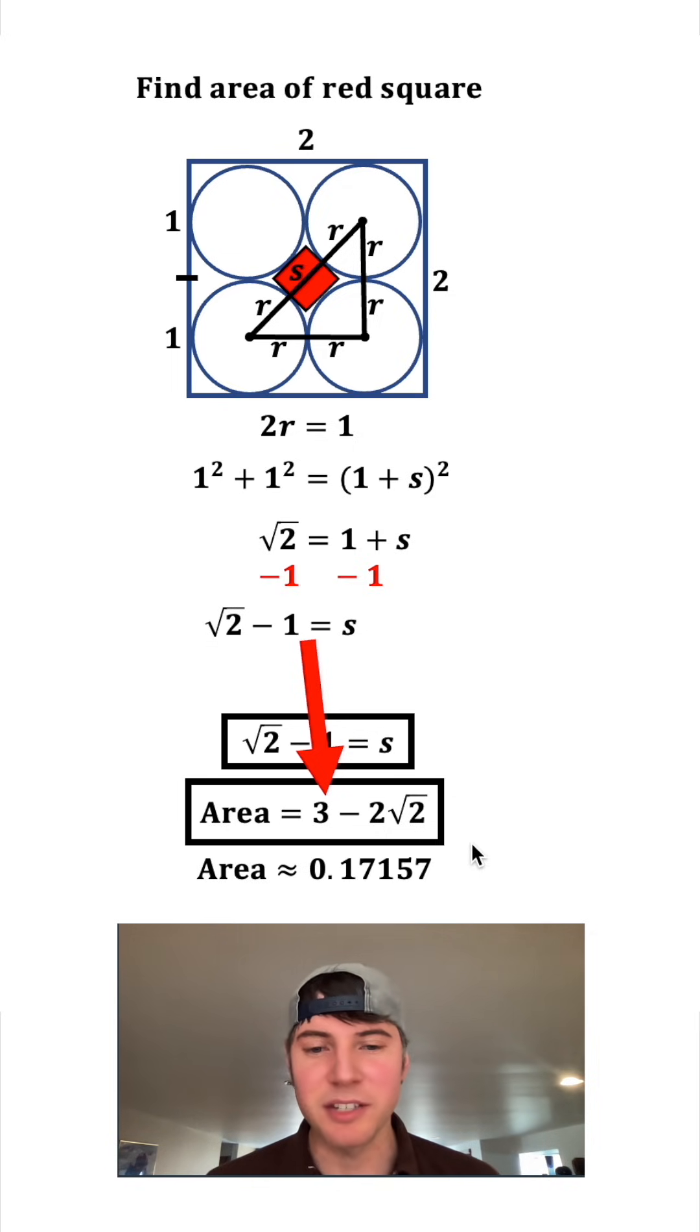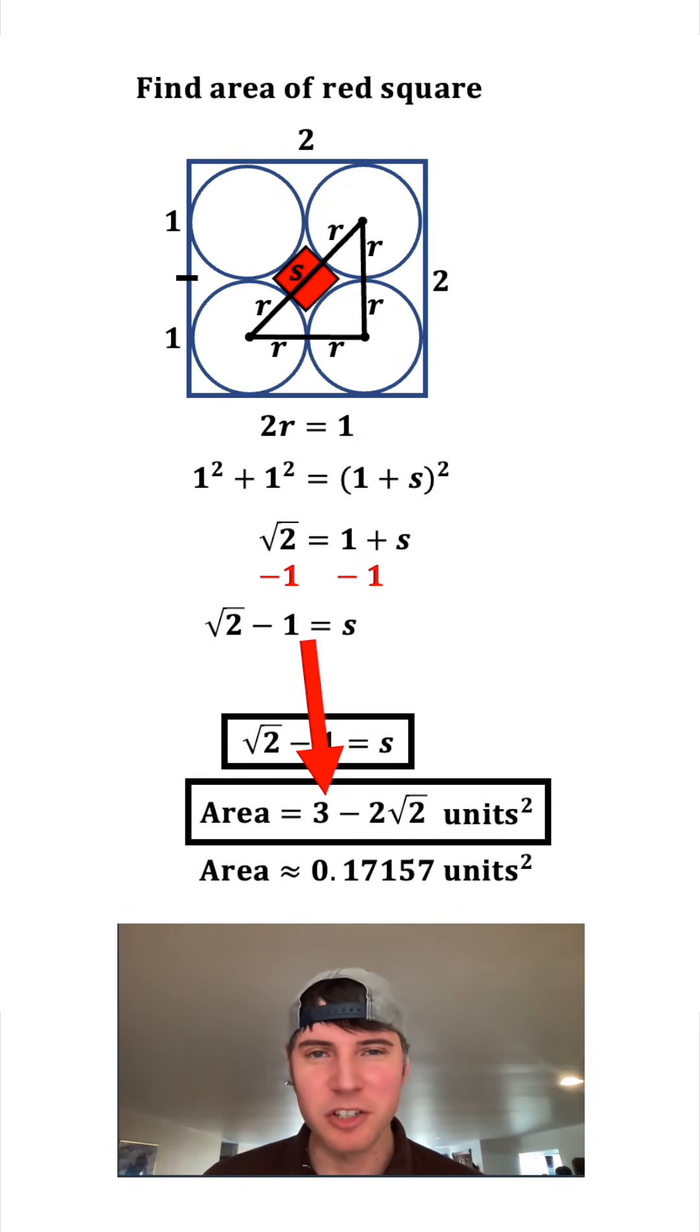Or in other words, 0.17157. I'm going to put units squared. So the exact value of the area of the red square is 3 minus 2√2 units squared, and the approximate area of this red square is 0.17157 units squared. How exciting!